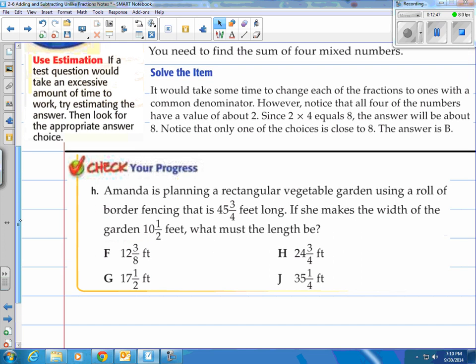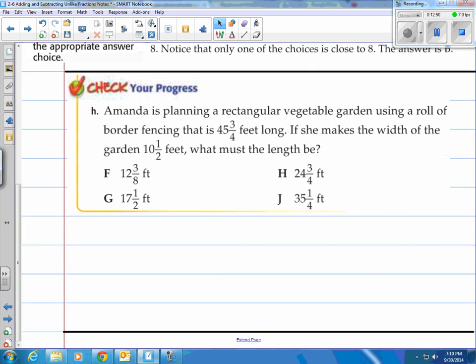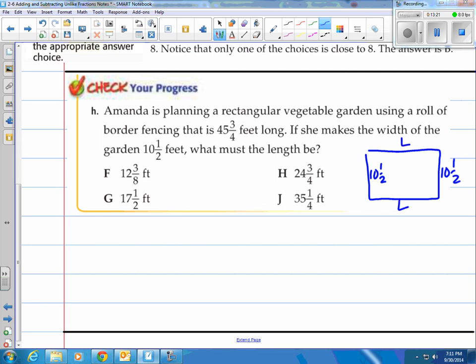How about you try that on this problem right here? It says Amanda is planning a rectangular vegetable garden using a roll of border fencing that is 45 and three-fourths feet long. If she makes the width of the garden ten and a half feet, what must the length be? Well, real simple. I like drawing pictures on these types of problems. They said that the width is going to be about ten and a half feet, ten and a half feet. Well, that means this is going to be about ten and a half feet, and they want to know what the length is. I don't know what the length is here, we have to figure that out.